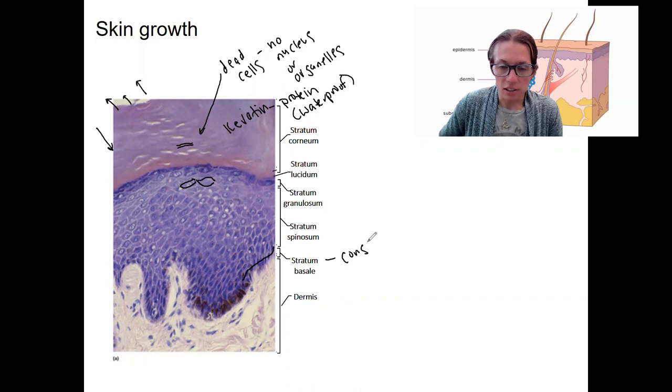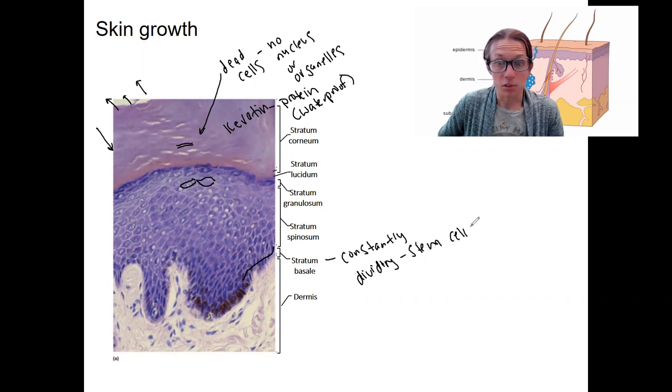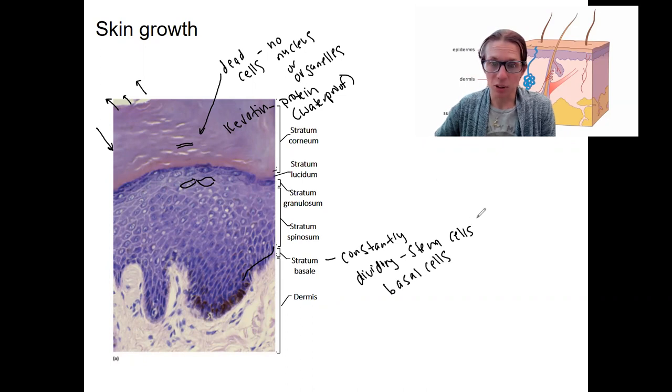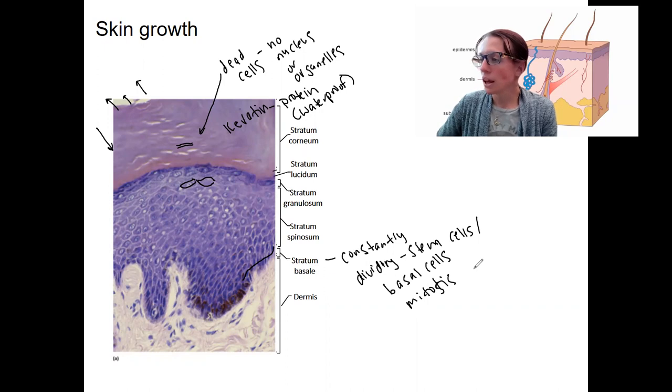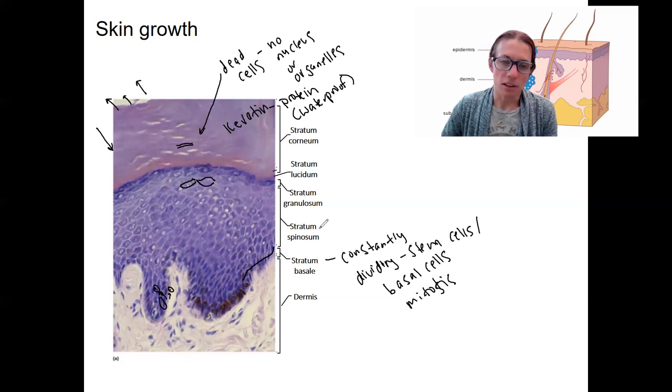These are constantly dividing. They are stem cells. Stem cells, probably heard of those, are cells that are able to keep going through mitosis. So these basal cells, you'll also see them called basal cells, are stem cells in this basal layer. They are going through mitosis. When they divide, one of the cells has to go somewhere. So you've got a cell right here, it divides into two. One cell stays down in the basal layer. One cell pops up into the stratum spinosum. So this is going to be the young cells from that basal layer.